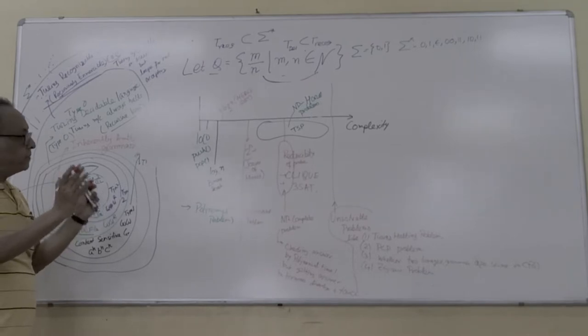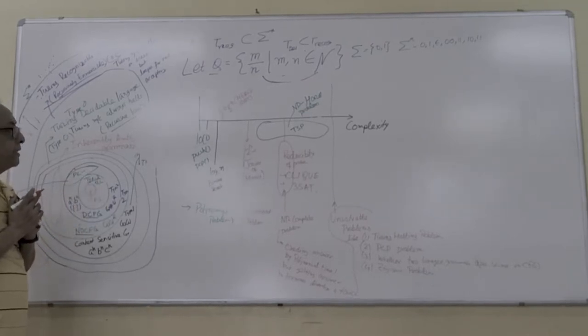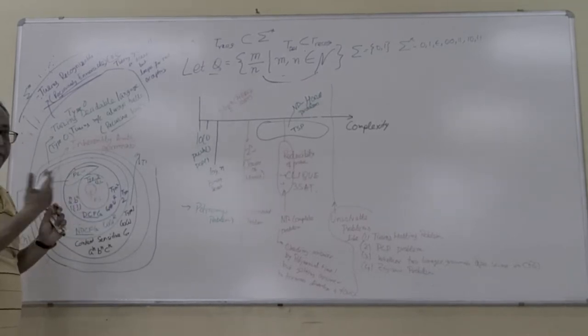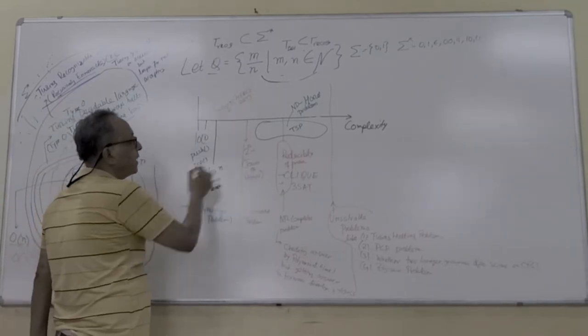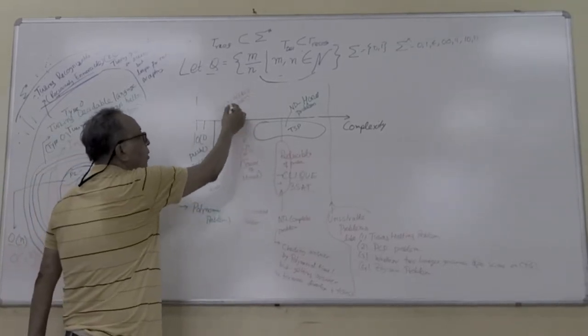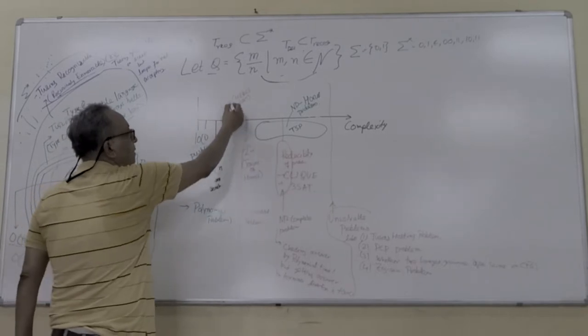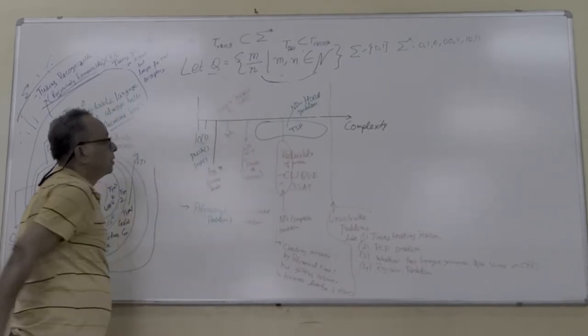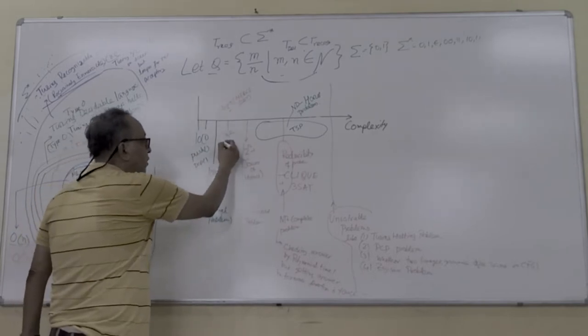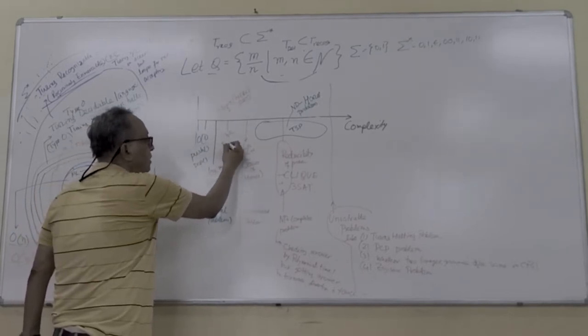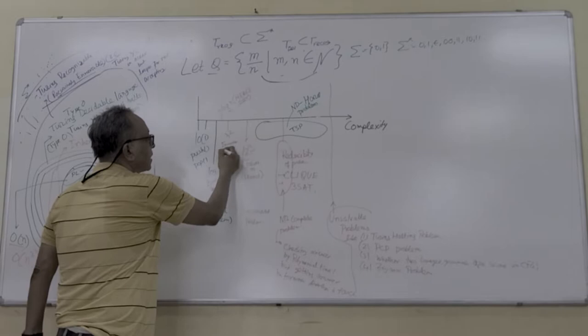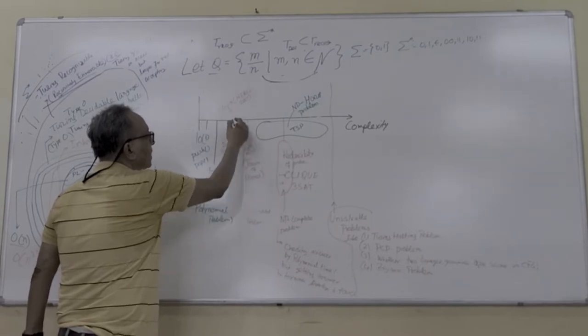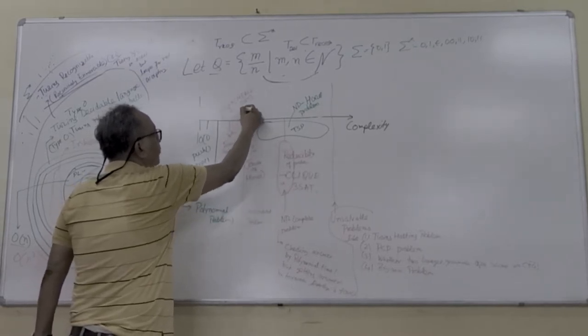If a particular item is stored in a binary search tree, you can find it out by log n. Then there's N log N, like merge sort. Then N squared, like your bubble sort and other sorting algorithms like insertion sort, which is very famous. Then comes N cube, like matrix inverse.